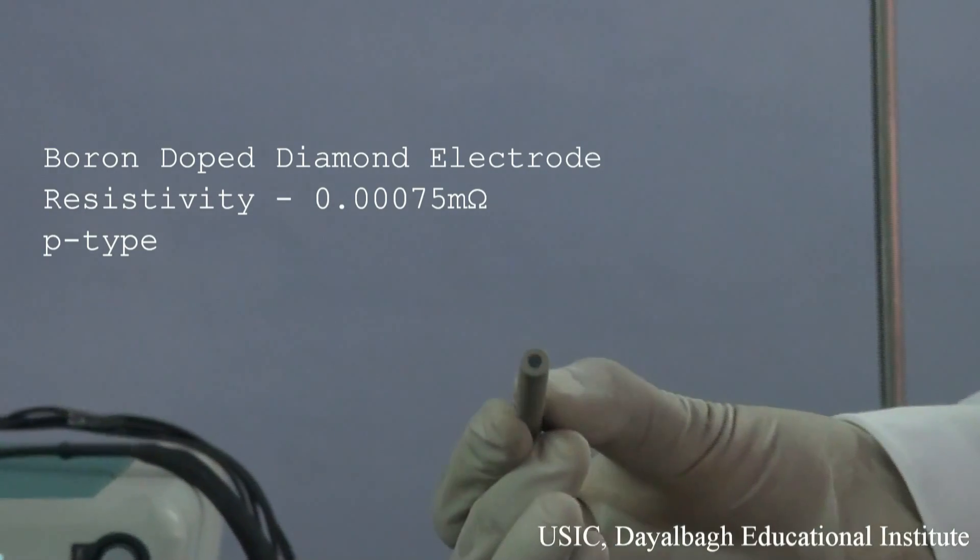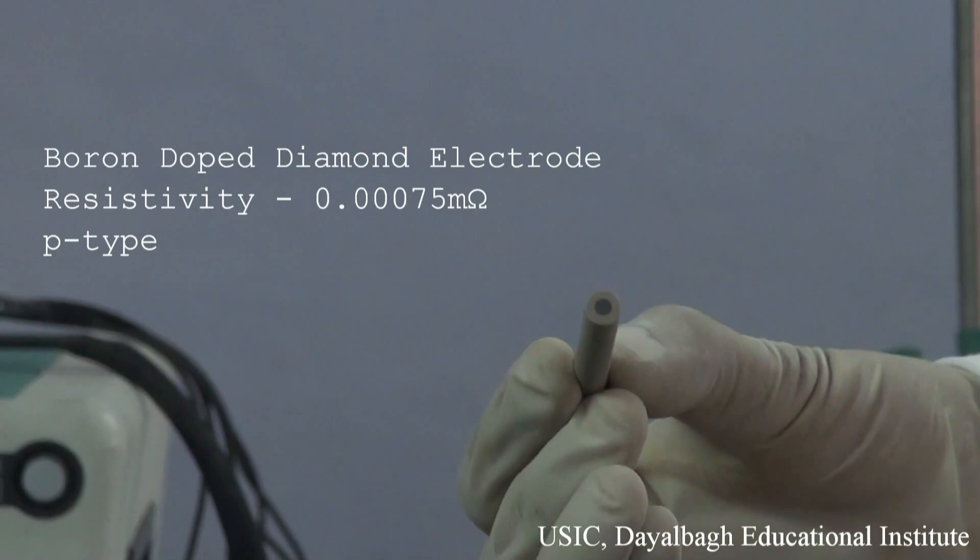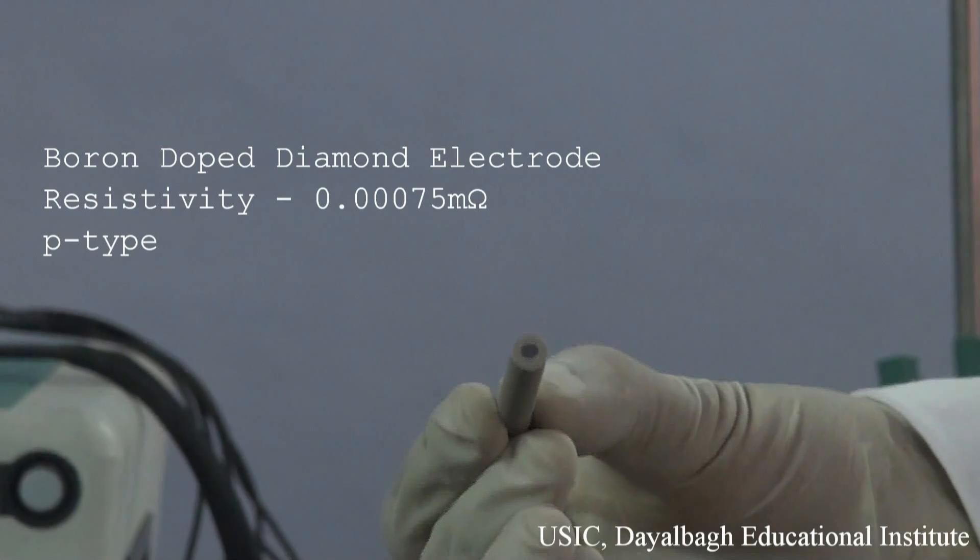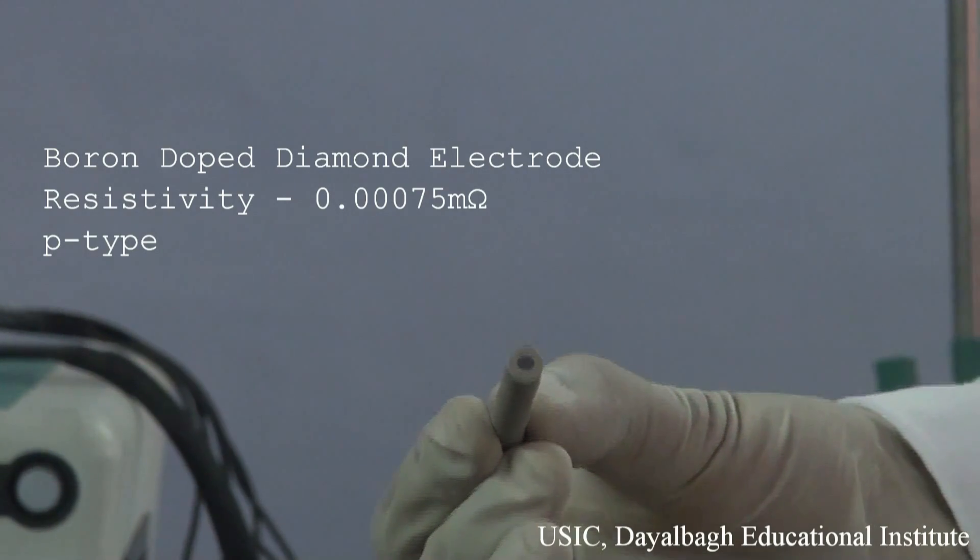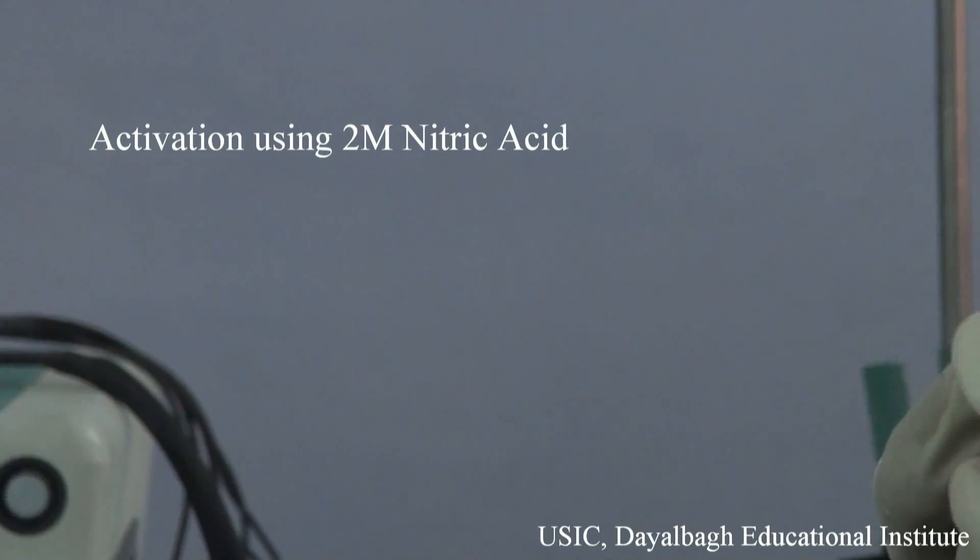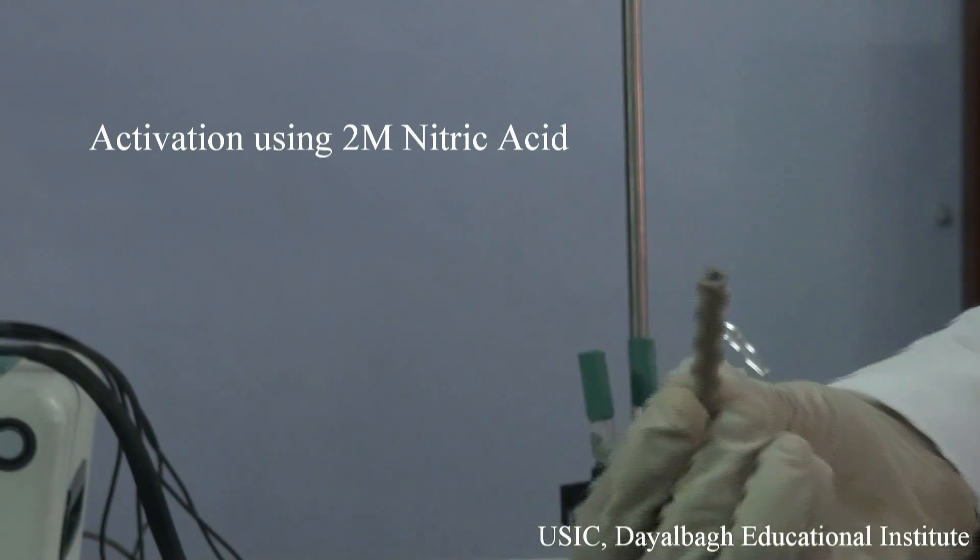Now, this boron-doped diamond electrode is a highly conducting electrode. It has a resistivity of 0.75 into 10 raised to the power of minus 3 milliohms. We have already activated the electrode for the analysis of the water sample.